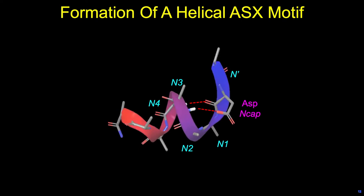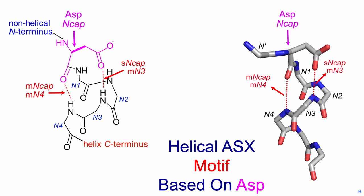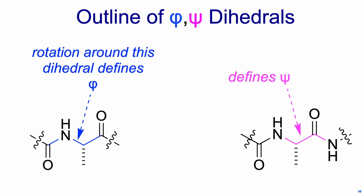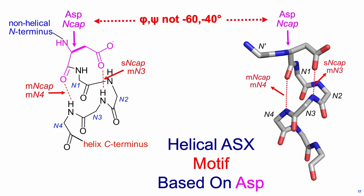Turns have one hydrogen bond; motifs have two. We invented nomenclature in our group to illustrate what those hydrogen bonds are. The main chain CO of the ASP N-cap is a hydrogen bond acceptor, and the N4 NH is a hydrogen bond donor. On the right-hand side, the side chain of the ASP N-cap hydrogen bonds to the main chain of the N3 residue. And there it is, folded up into a helical conformation. The phi dihedral is the one looking along NH to C-alpha; the psi dihedral is looking from C-alpha to CO. Residues inside a helix have approximately a phi-psi angle of -60, -40. The N-cap is not -60, -40 because it deviates from helicity.